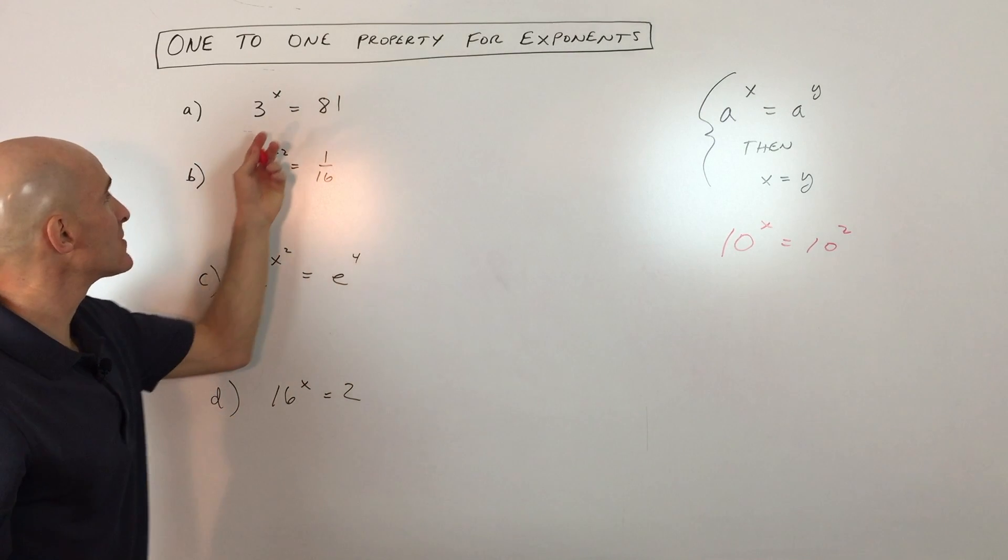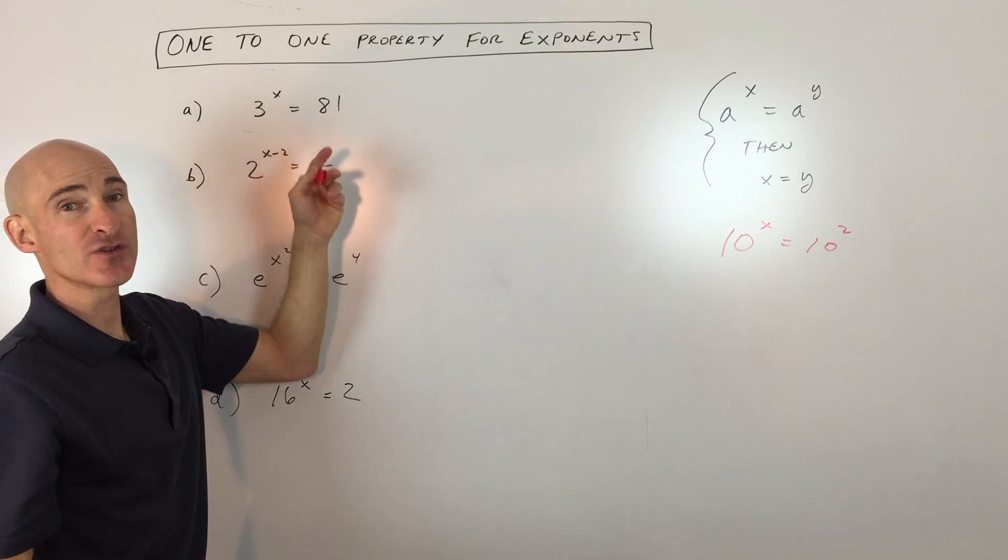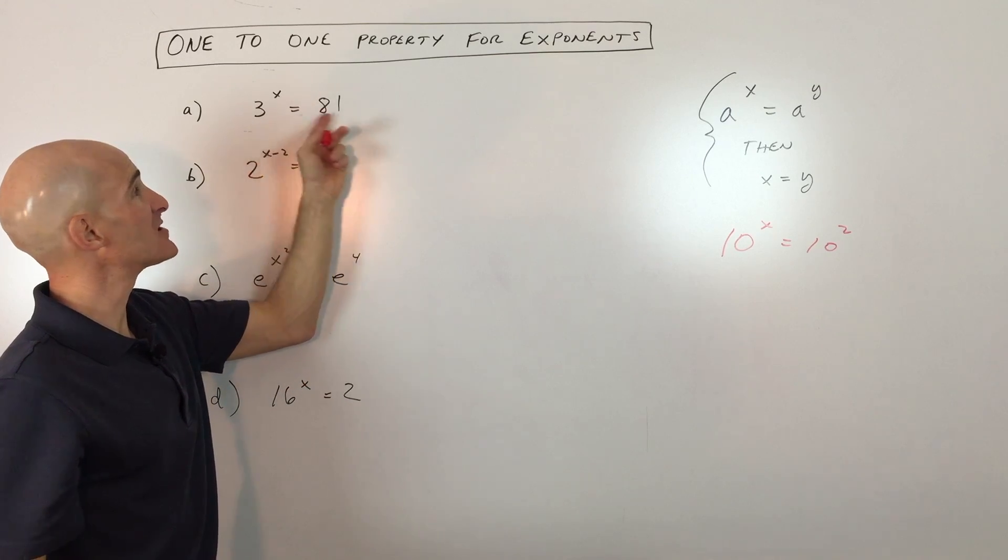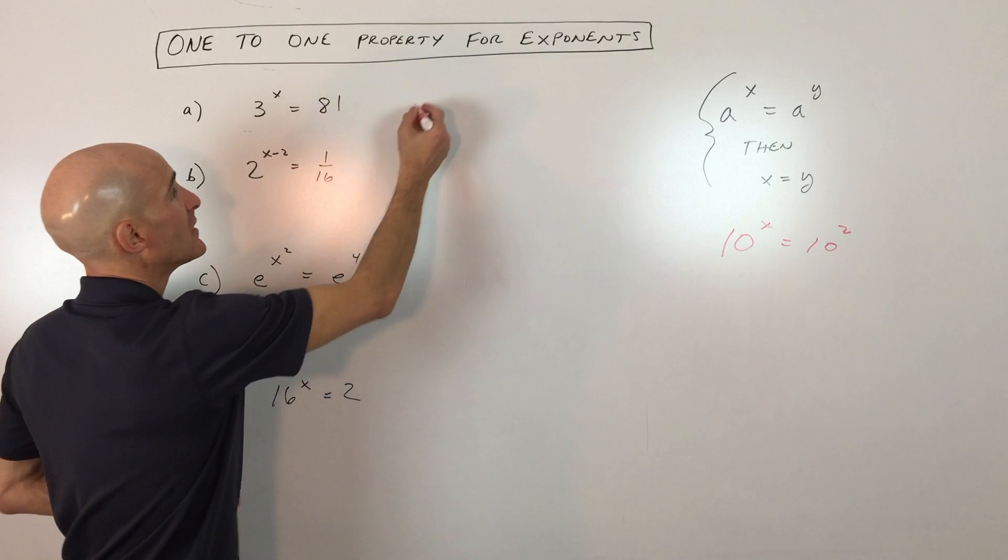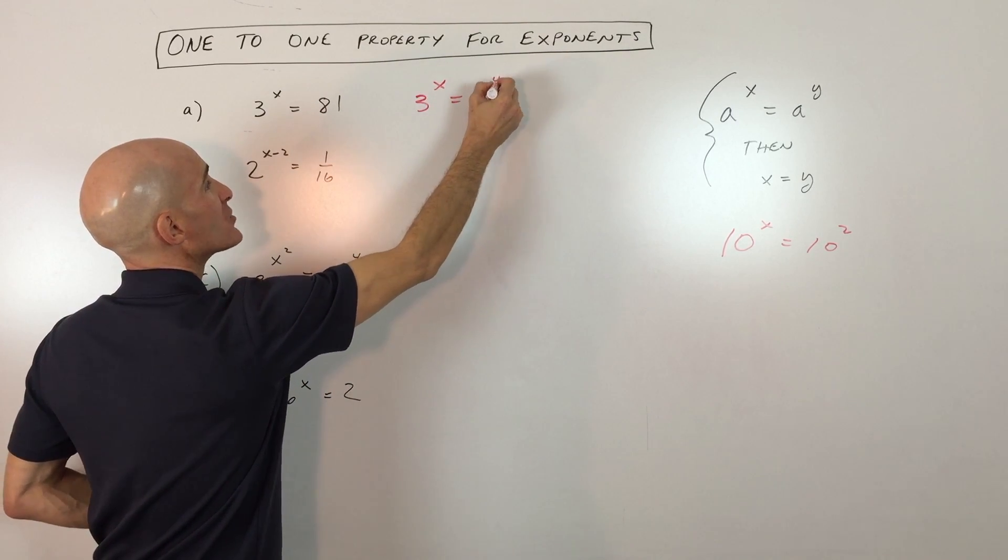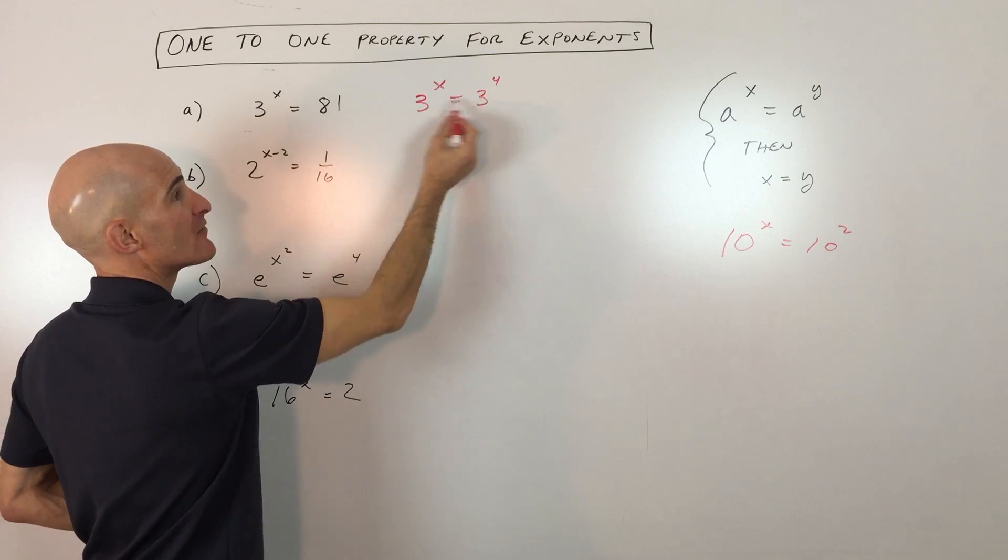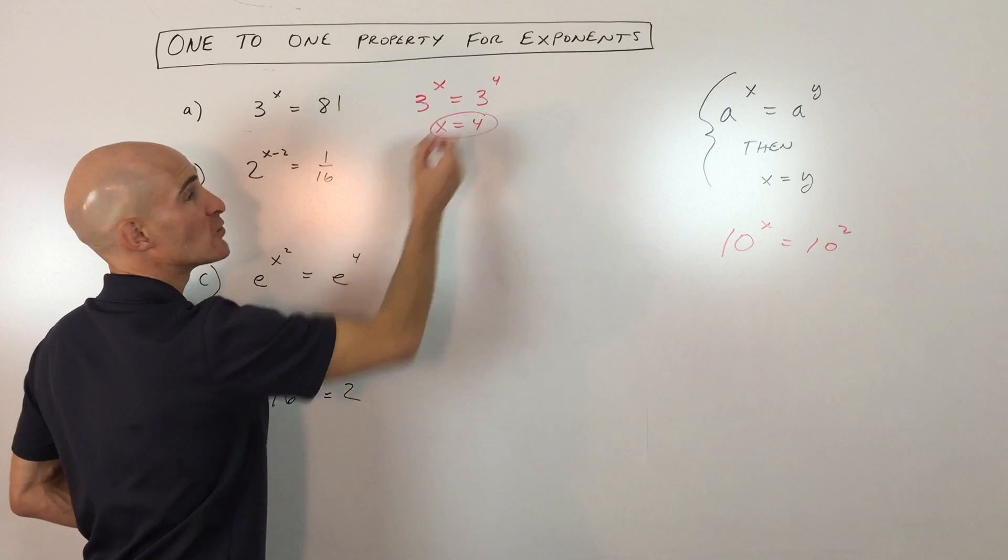Let's do a few more challenging ones. So let's take like a letter a here, 3 to the x equals 81. So the first thing we want to do is see if we can get these bases to be the same. So what you'll recognize is that 81 is really 3 to the 4th. So we have 3 to the x equals 81, which is 3 to the 4th. Now we can see that we have the same base. We can set the exponents equal, x equals 4.